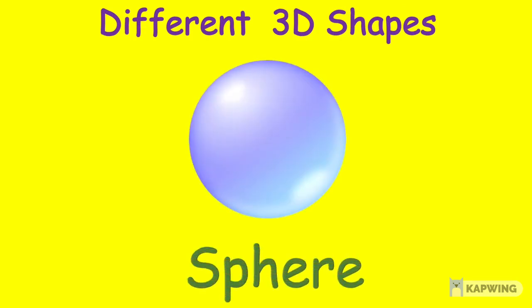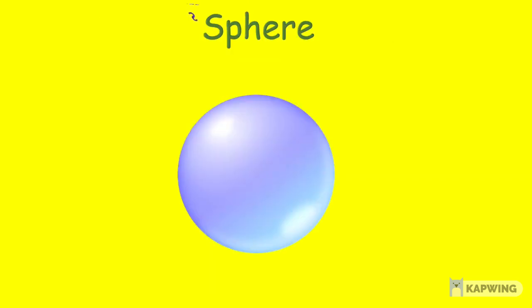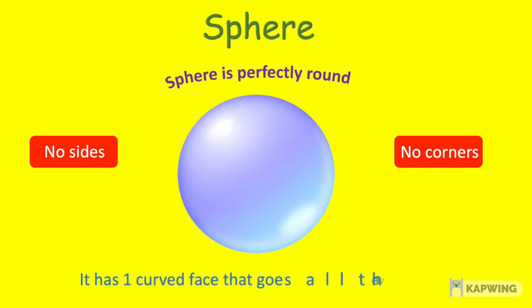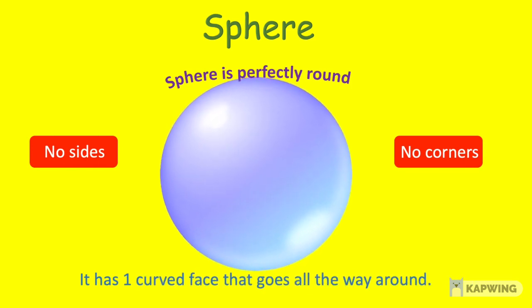Let us start with the sphere. Sphere is perfectly round. It has no sides and no corners. It has one curved face that goes all the way around. And as you can see kids, it is a blown up shape and it has thickness.